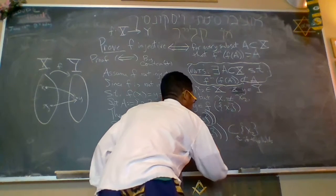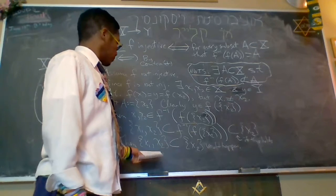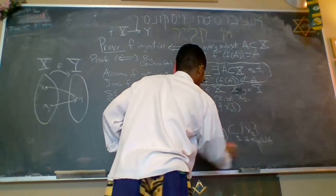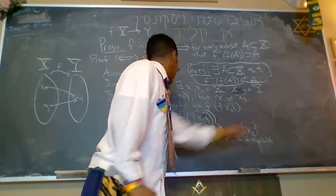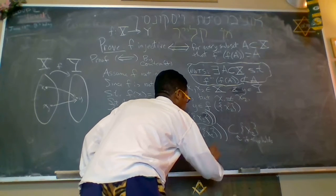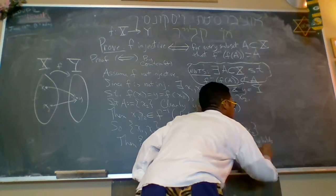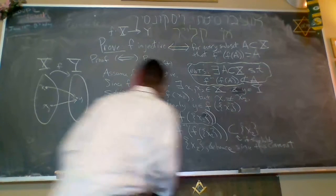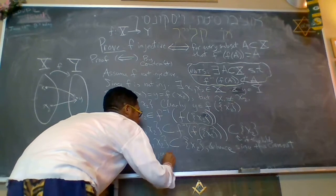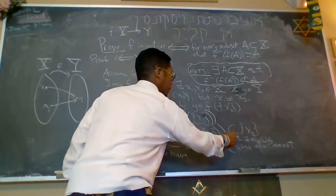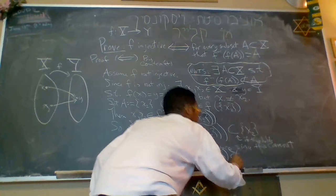If it were the case that this holds, then that would happen, and hence, this cannot be. We have, this cannot be the case, then we have f inverse of f of the set containing x2 is not a subset of x2.